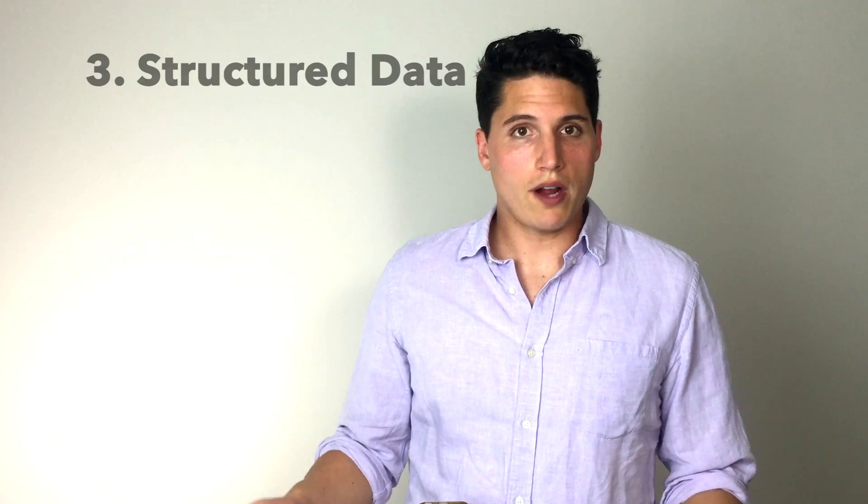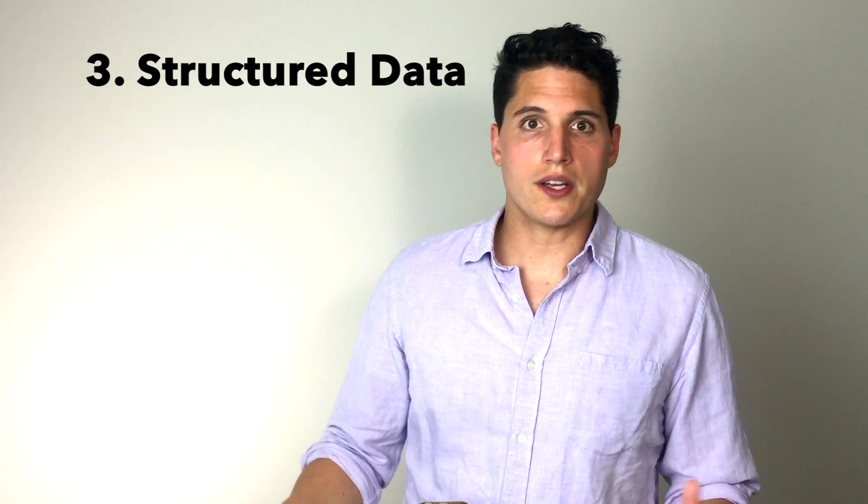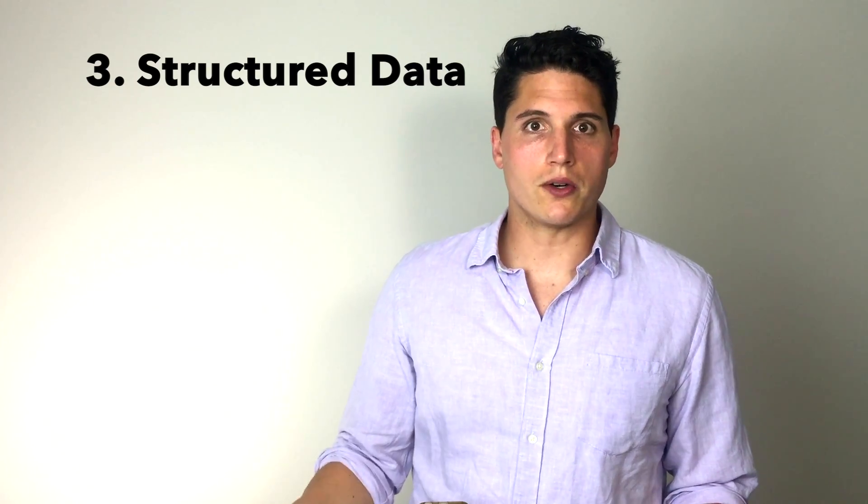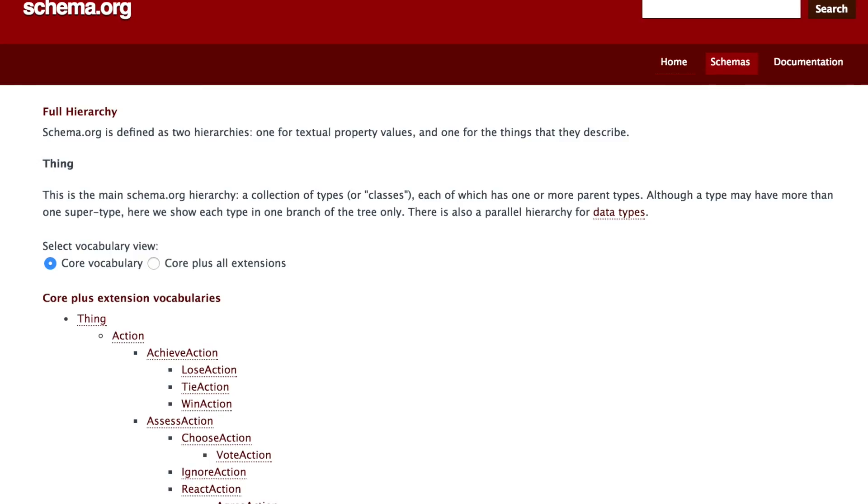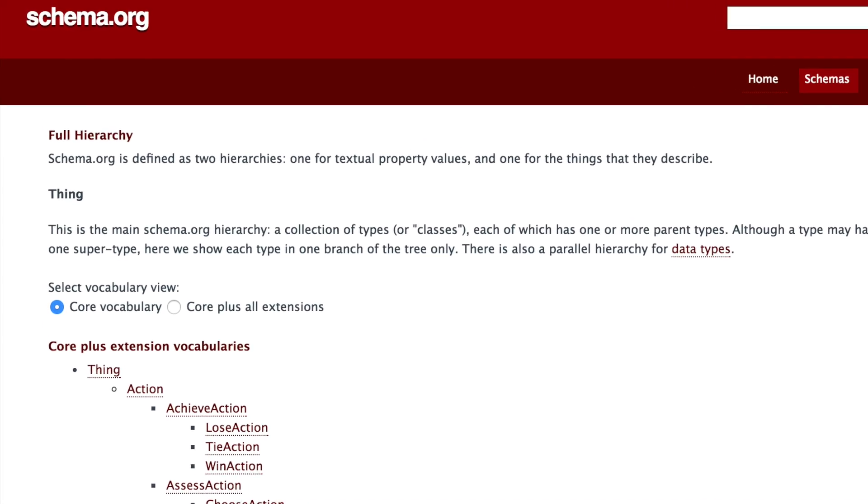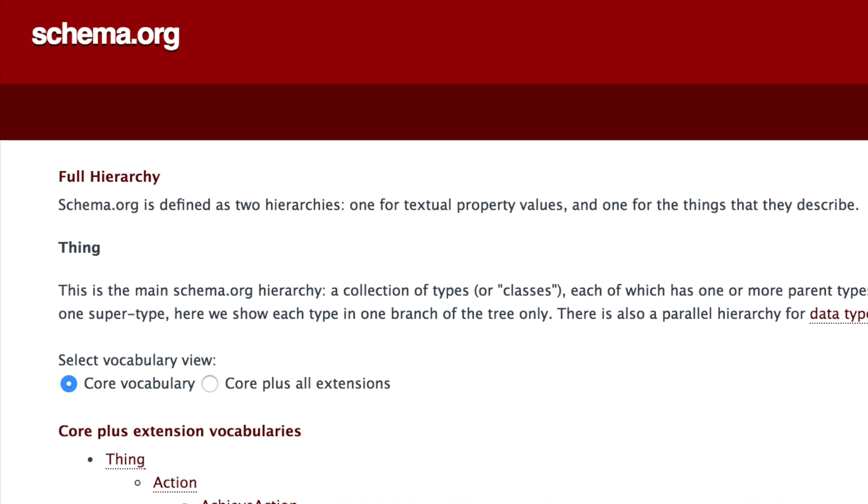Next up is Structured Data. Structured Data is markup text that you can add to your website to explain to Google how it should crawl your website. You can find the right markup text for your website by going to schema.org. Sometimes adding this data can prompt Google to create a knowledge panel for your website and your brand.